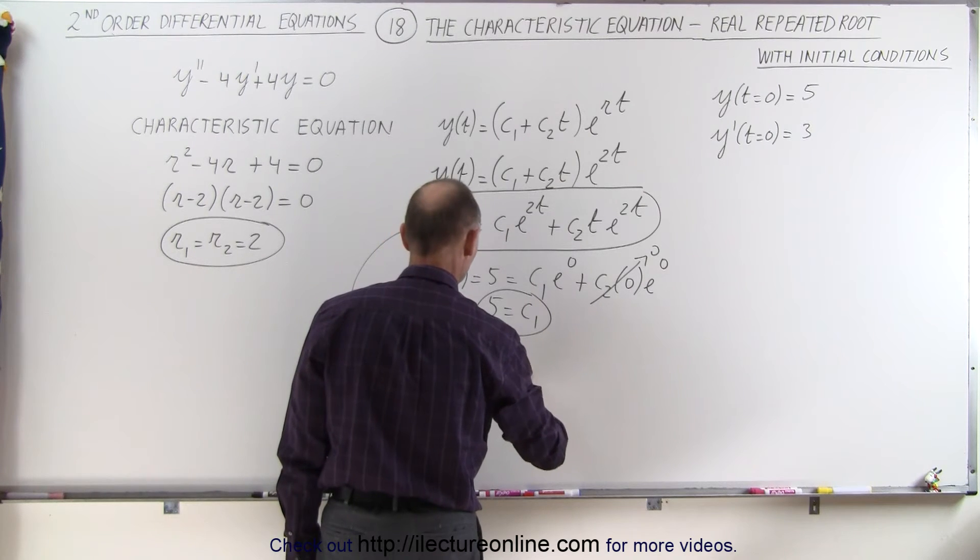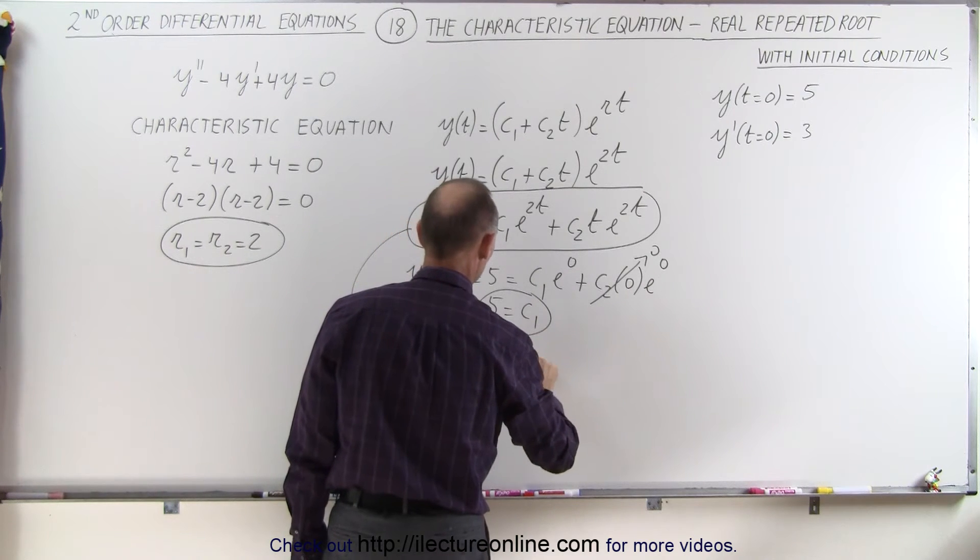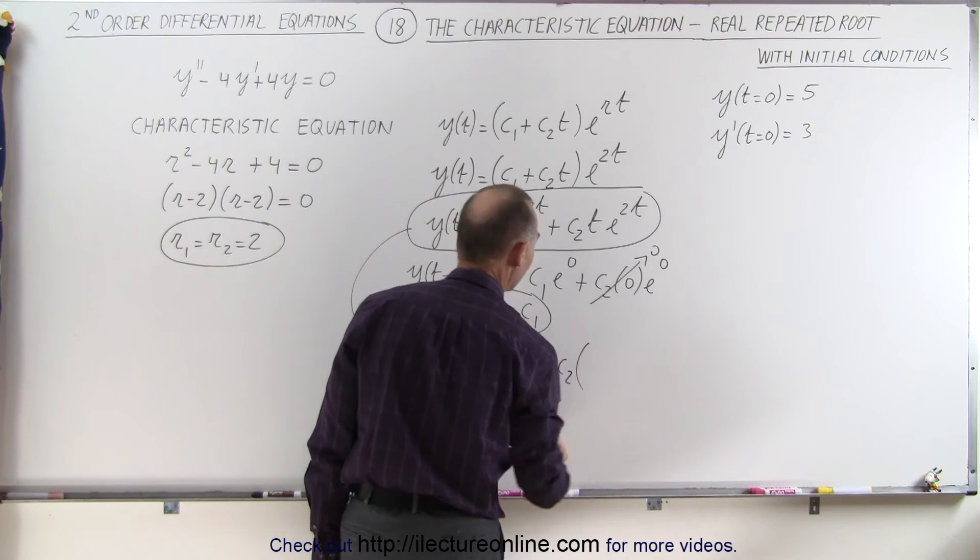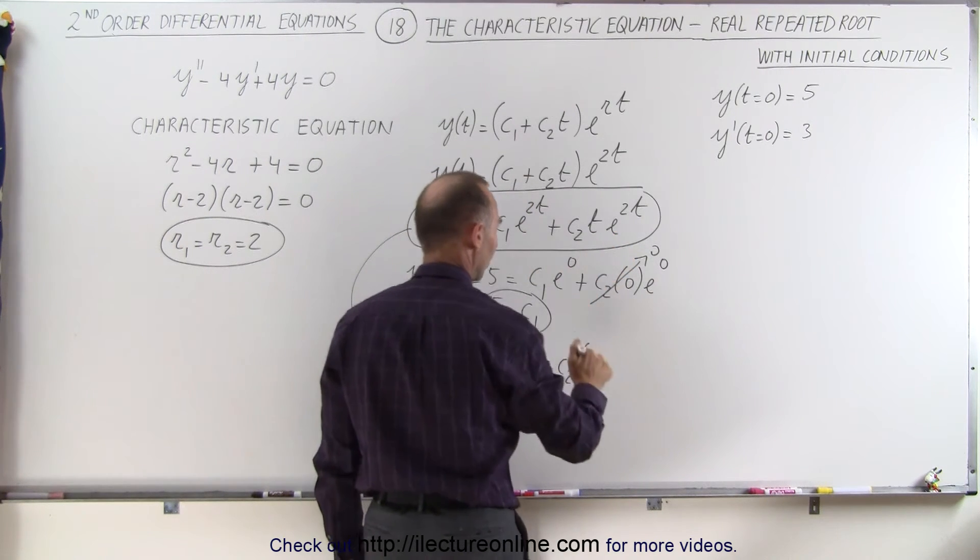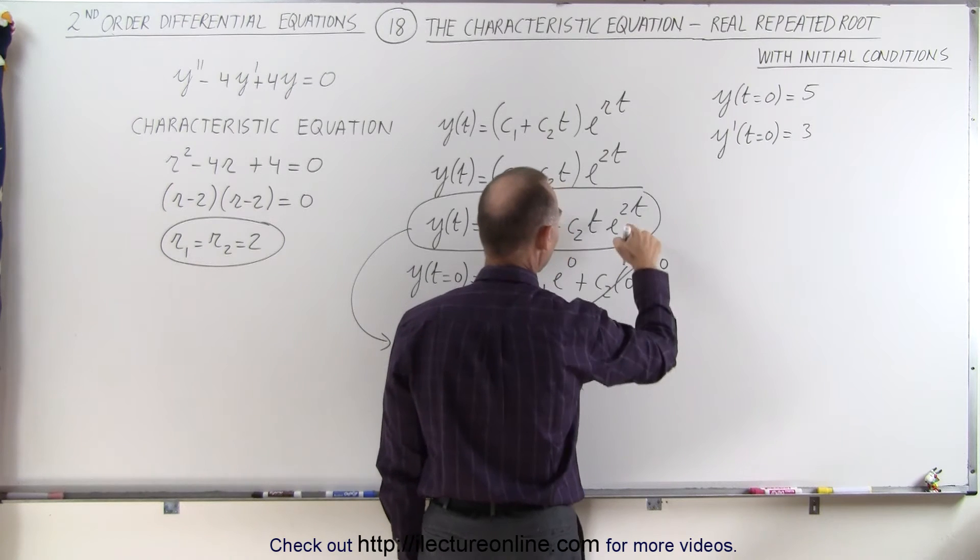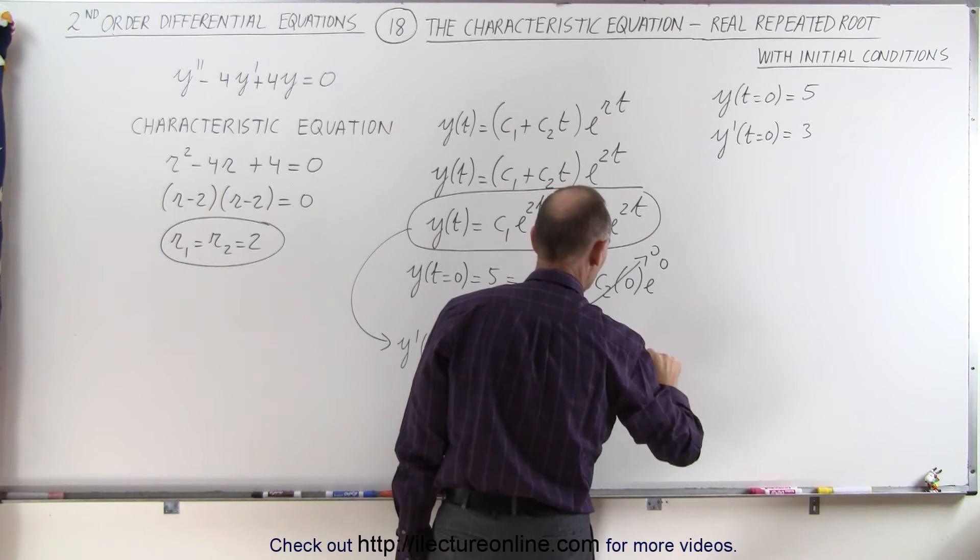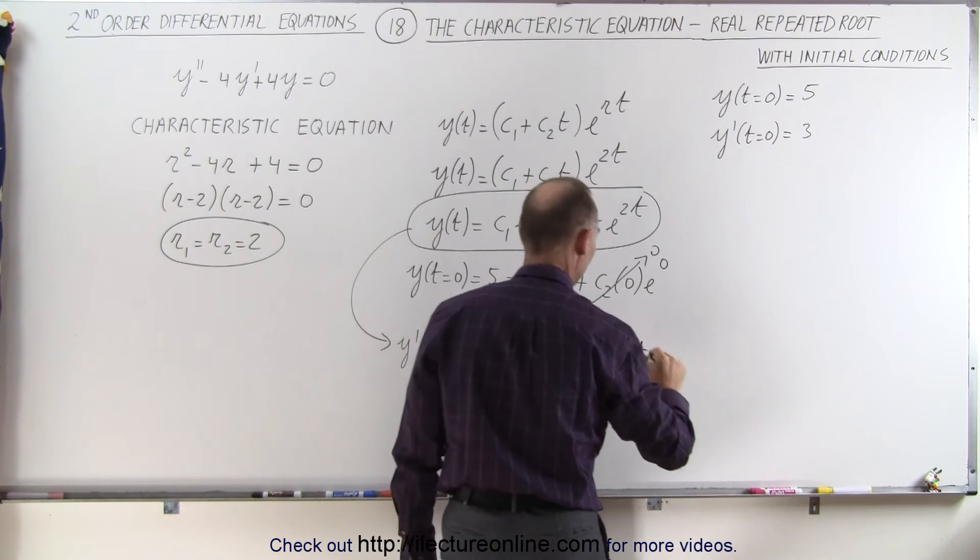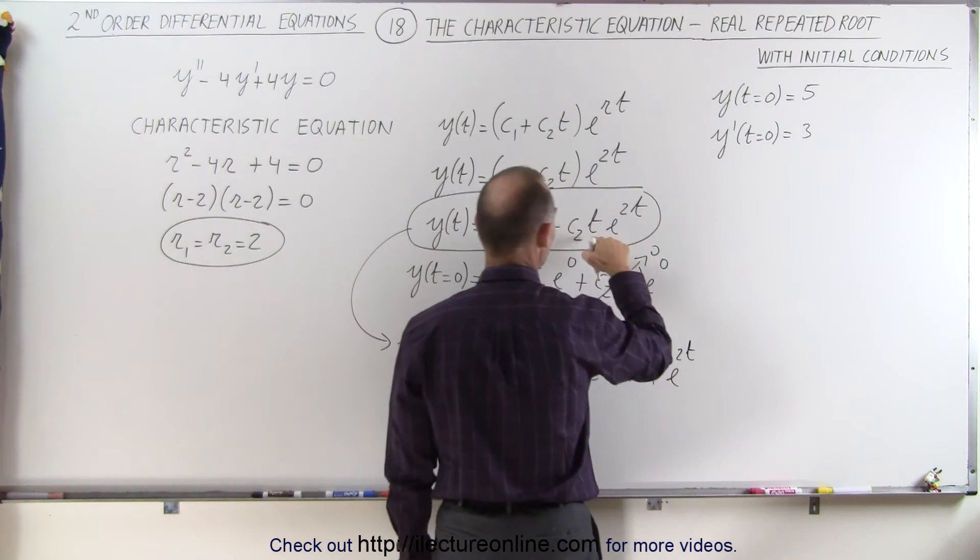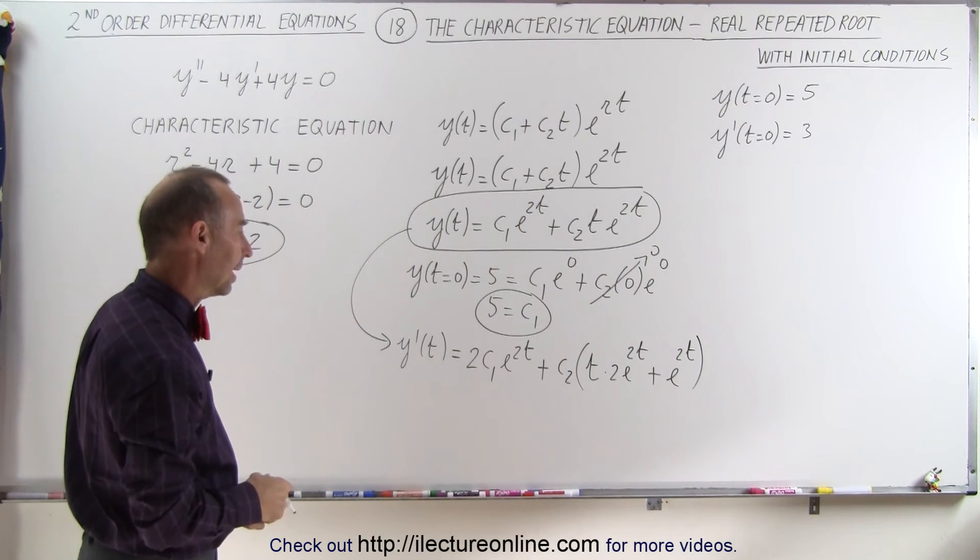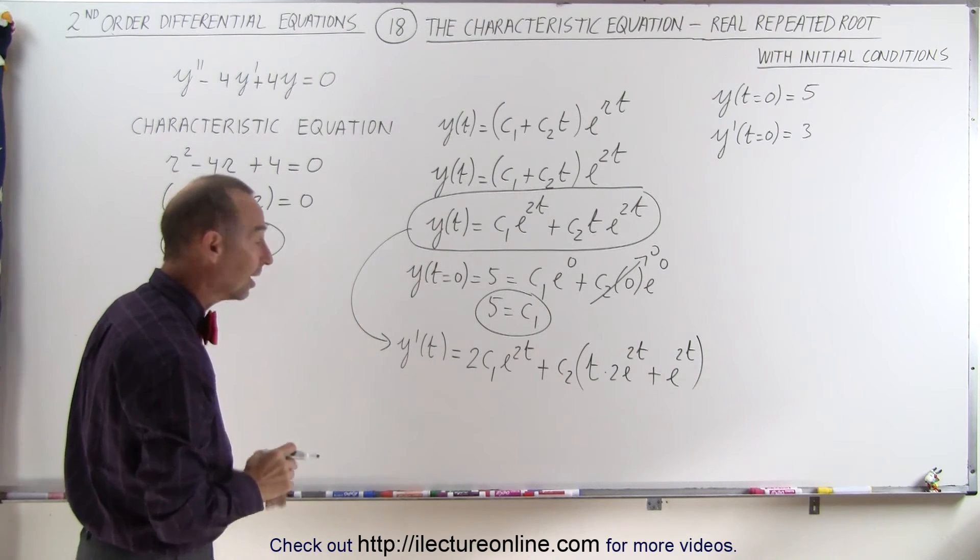We get 2 c1 e to the 2t plus c2 times... Now here we have a product. So we have the first times the derivative of the second, so times 2 e to the 2t, plus the second e to the 2t times the derivative of the first, which is 1. I don't think we need to do much with that to simplify. We can just leave it as is.